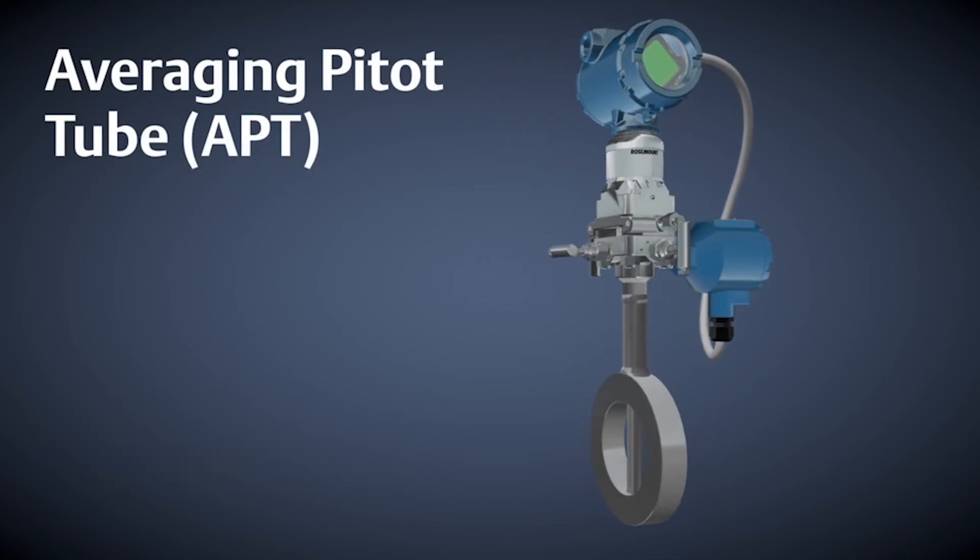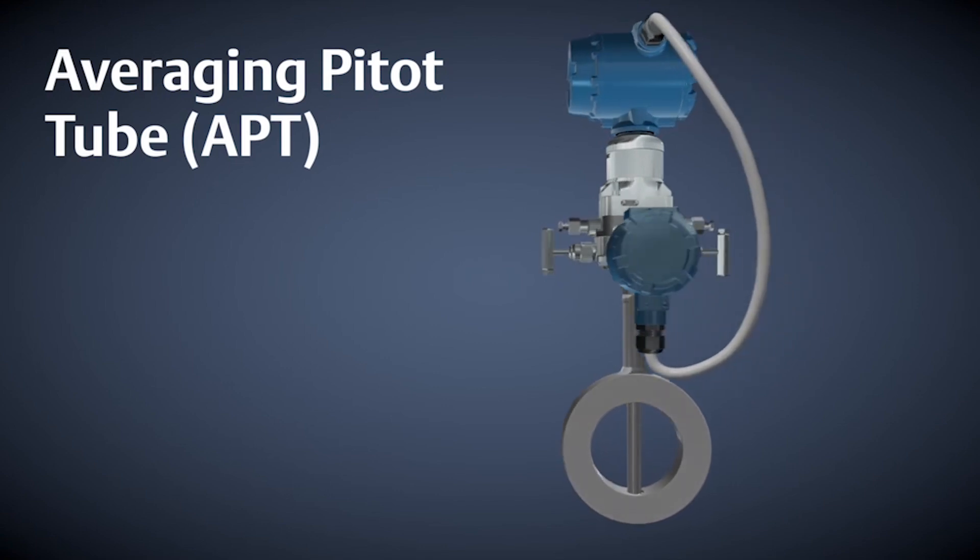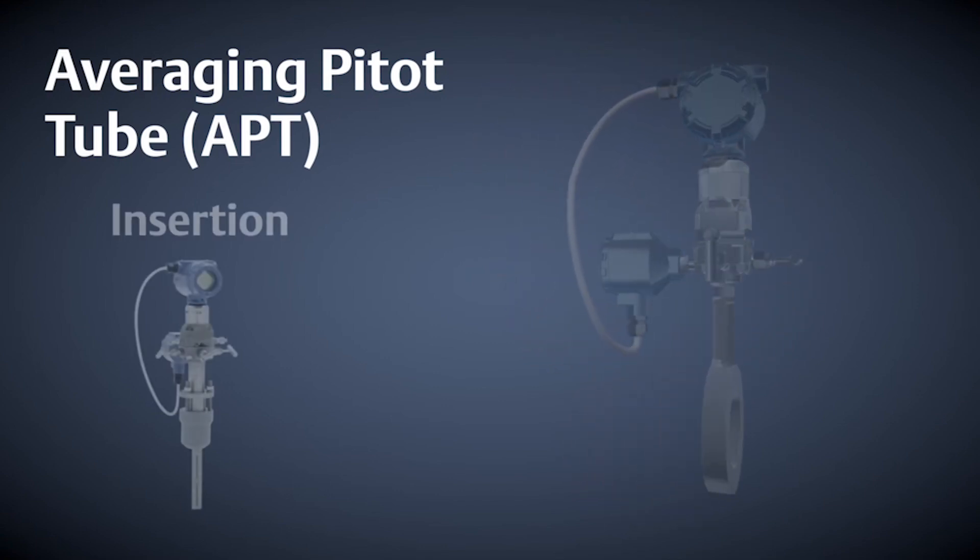Emerson's Anubar averaging pitot tube flow meters are available in many mounting styles, including the insertion mounting style which provides an economical installation in large line sizes.